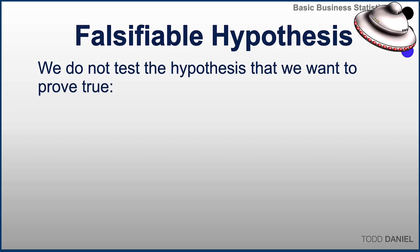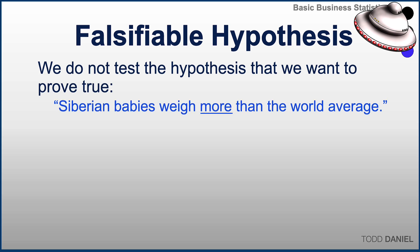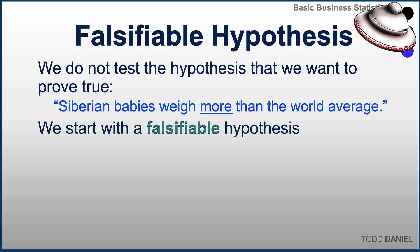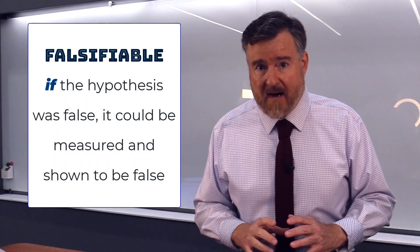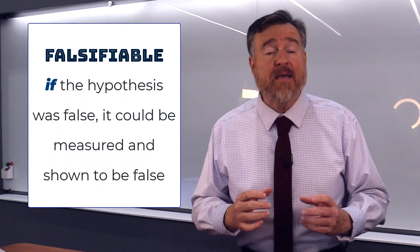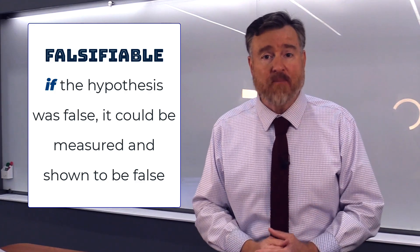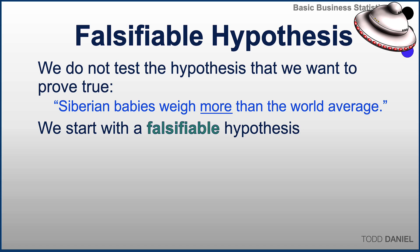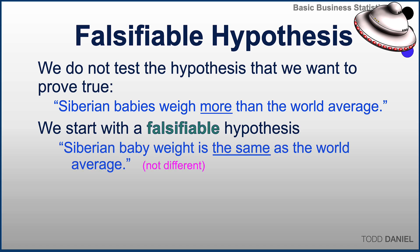We do not test the hypothesis that we would like to prove true — that Siberian babies weigh more than the world average. We will start with a hypothesis that can be demonstrated to be false. It is a falsifiable hypothesis. This doesn't mean that our hypothesis is false; it means that if it was false, we would be able to measure it. The falsifiable hypothesis we would use is that Siberian baby weight is the same as the world average — that those weights from the sample and the population are not different.